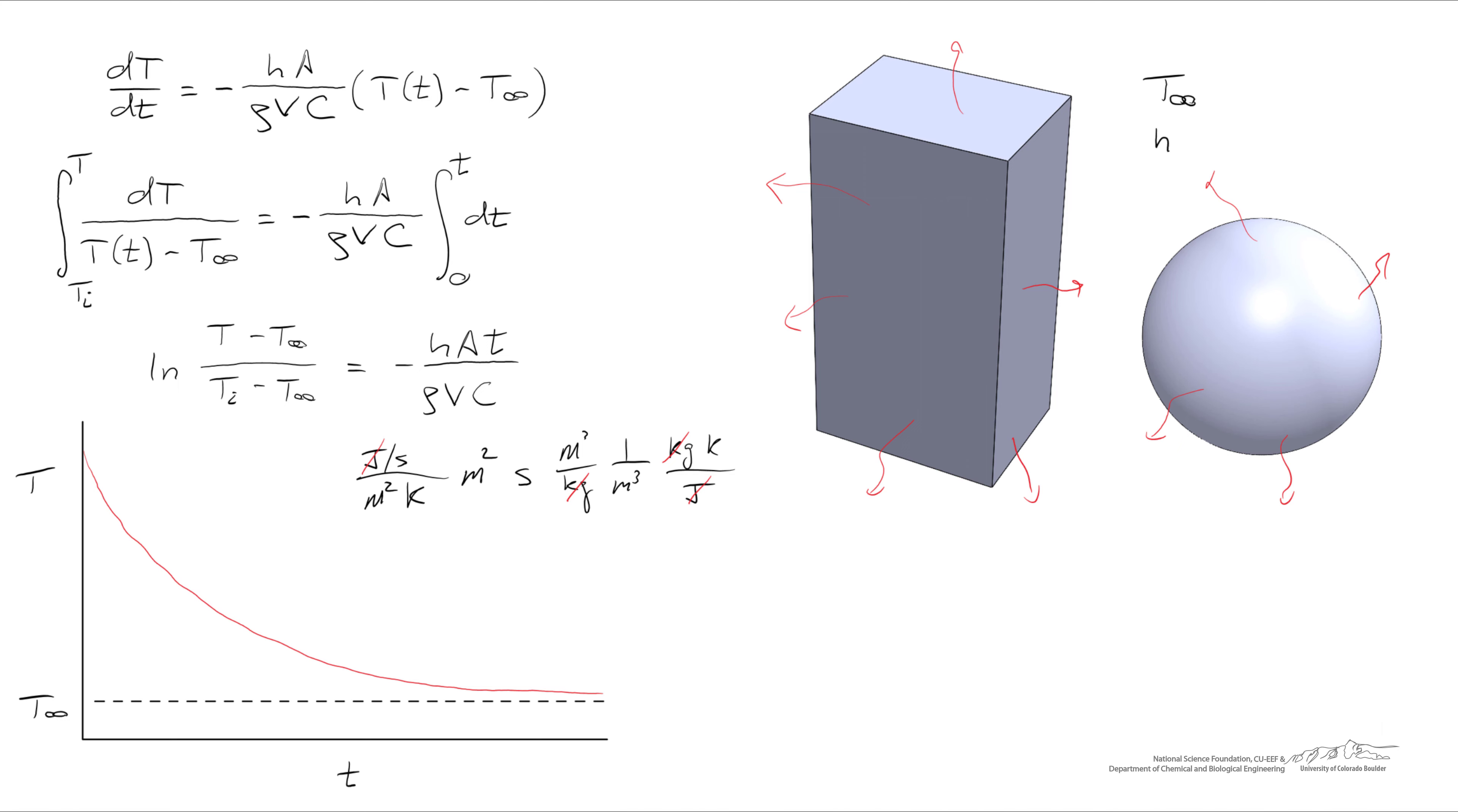And one over the heat capacity is kilogram Kelvin per joule. Simplifying the units, we'll find that the energy, the masses fall out, volumes fall out, temperatures fall out, meters squared the area, and as does time, we'll find that the right hand side is indeed dimensionless.